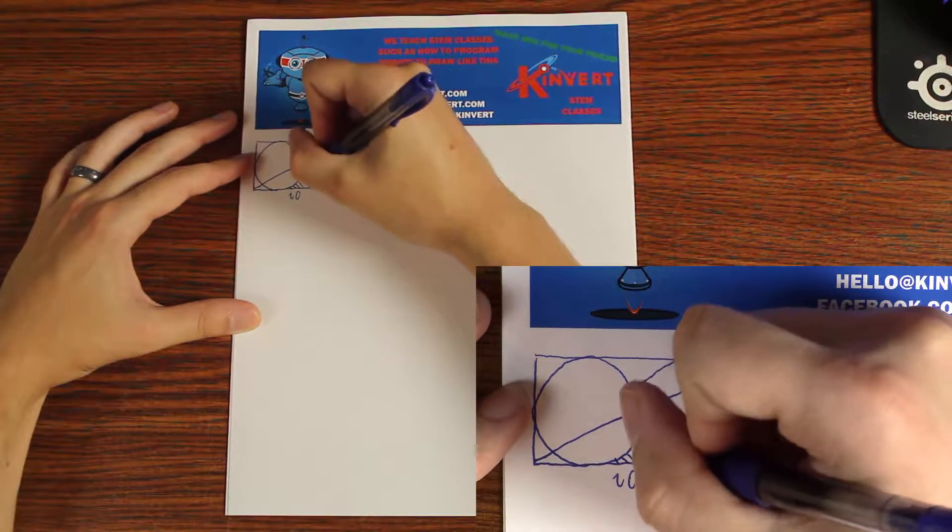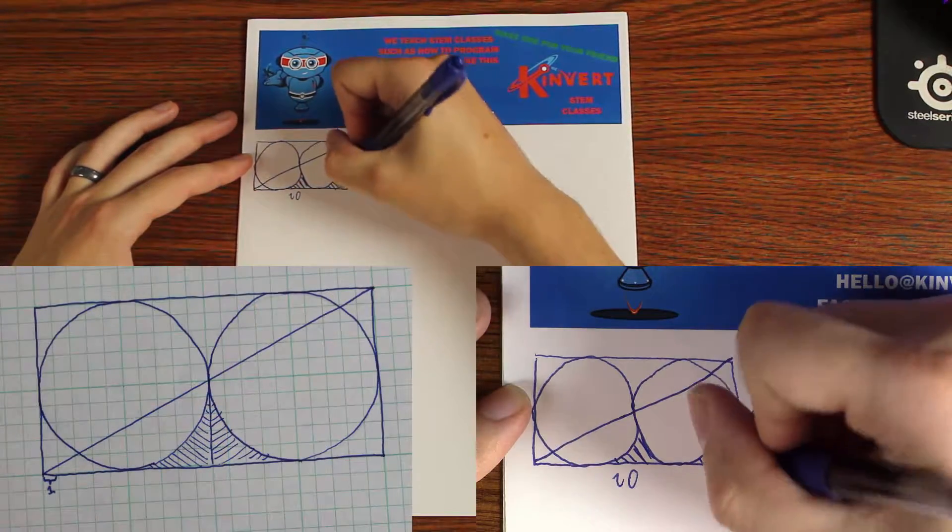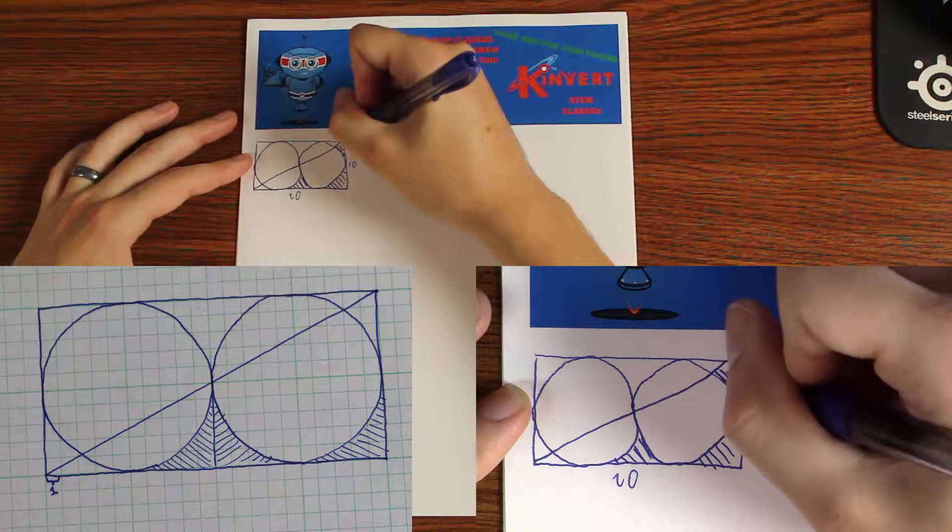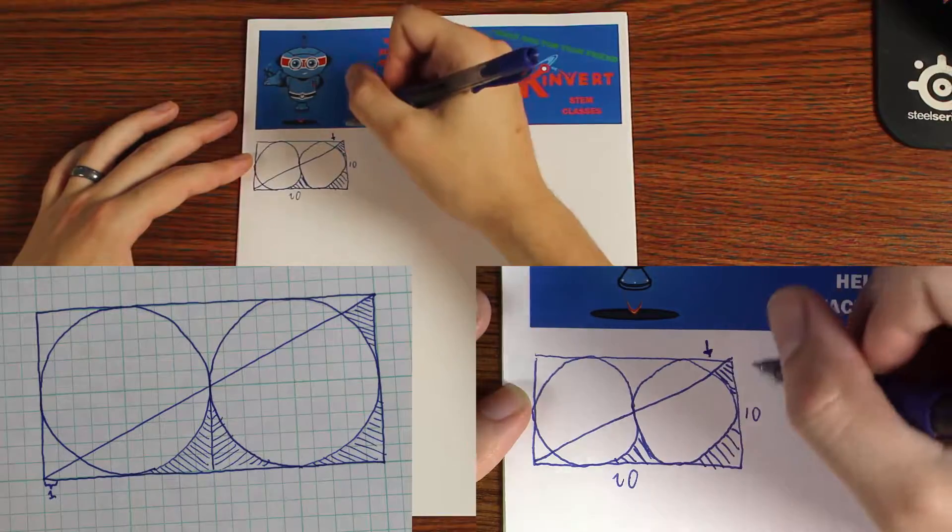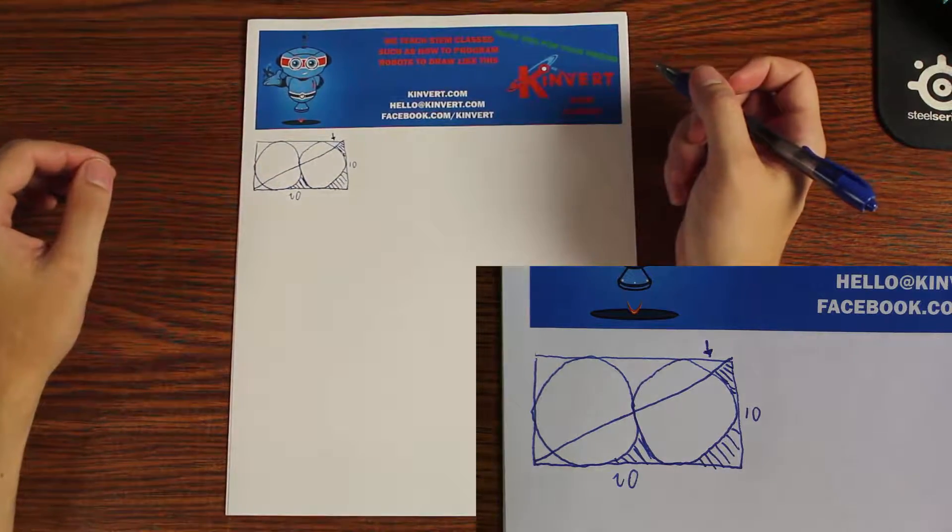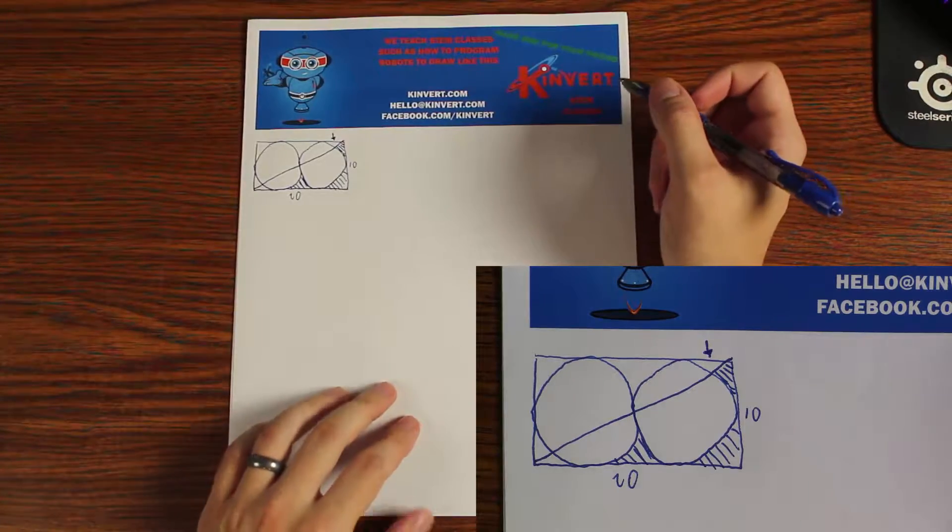So we're looking for the area here, here, and then if you look closely, it's here. We're ignoring this area. Now, the first thing that I do in these sorts of things is look for some sort of symmetry. And we've actually got some here.